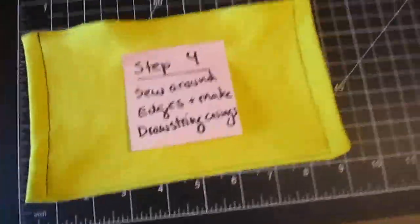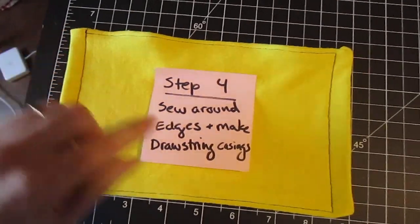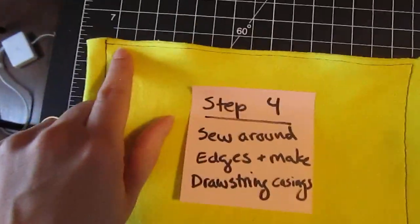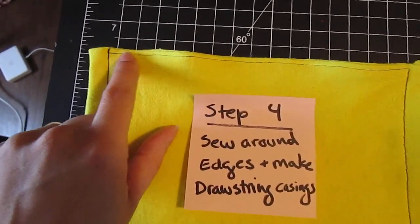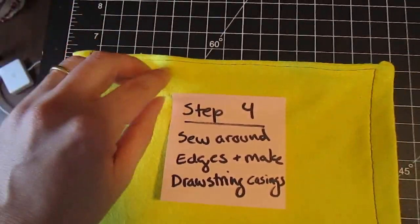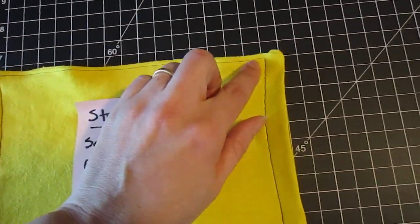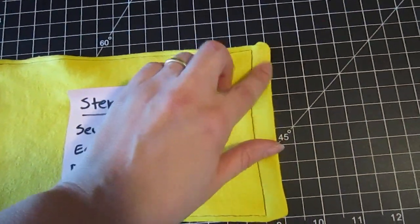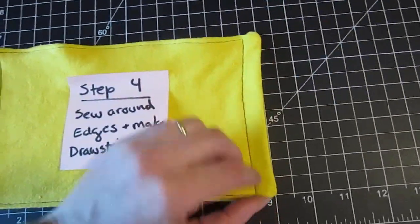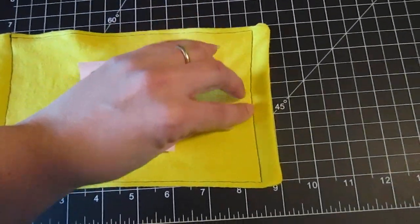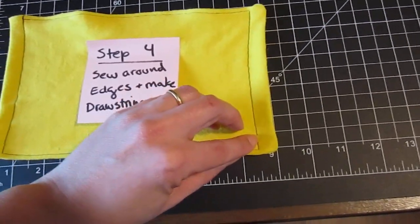Step four. You want to sew again. And this is to sew down the edges and to make the drawstring cases. So I started up here at the top. Back stitched. And I sewed really close to the edge here, about an eighth of an inch all the way over here. And then I stopped about a half inch from the seam. Again this is where that opening is at the top and the bottom. Sewed a half inch away from the edge to make my casing.